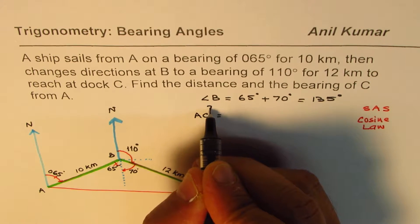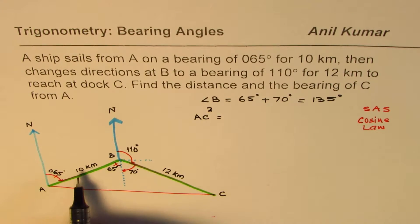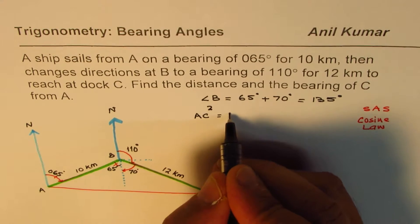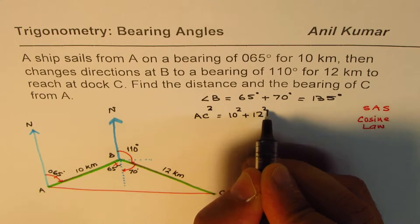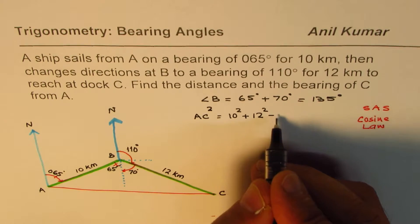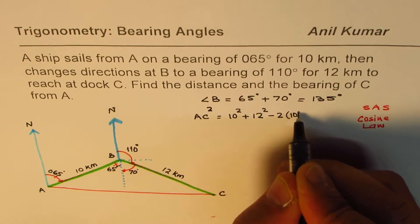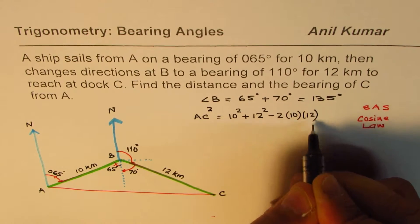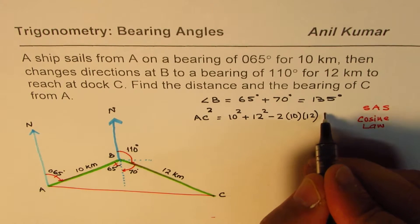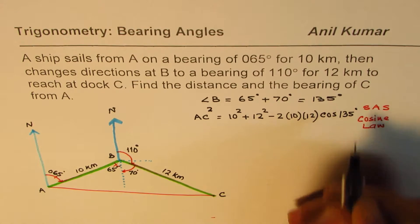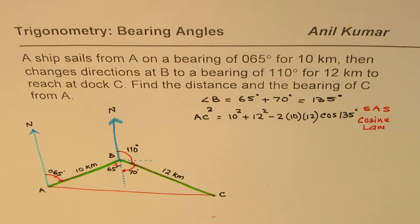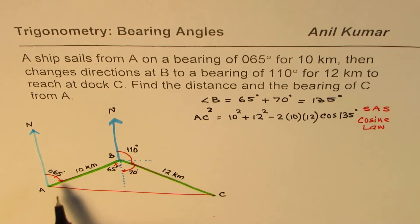So AC square will be equal to sum of these two squares which is 10 square plus 12 square minus 2 times product of these two which is 10 times 12 times cosine of the angle, times cos of 135 degrees. So that is the cosine law. I hope you remember the formulas.